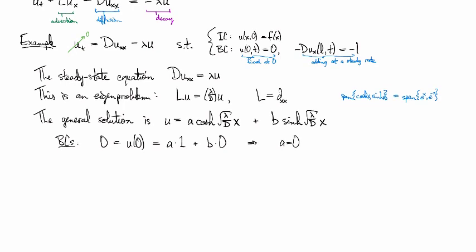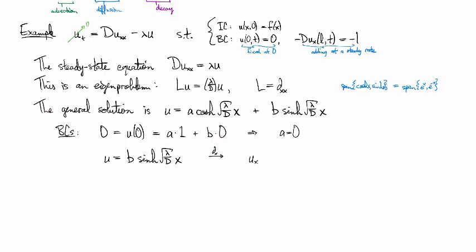So then that tells us that our general solution just got simpler. So then for the other boundary condition, well, I guess I should have this moved over some, for the other boundary condition, we're going to have to differentiate because the other boundary condition is on u sub x. So we take the derivative with respect to x, and this is going to kick out a factor of root lambda over d, and derivative of cosh is sinh, and derivative of sinh is cosh.